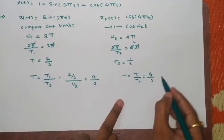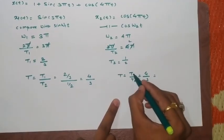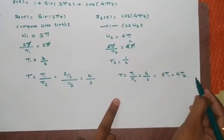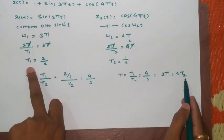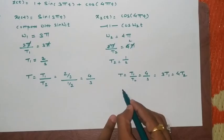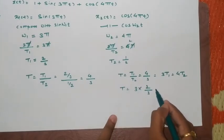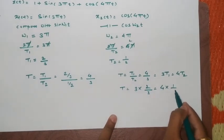Here I am writing it as T = T1/T2 which equals 4 by 3. So these terms can be multiplied with each other and I can write the same term 3 into T1 equals 4 times T2. Now we know the values of T1 as well as T2. If I put those values here I can get the total time period as 3 into 2 by 3 equals 4 into 1 by 2.